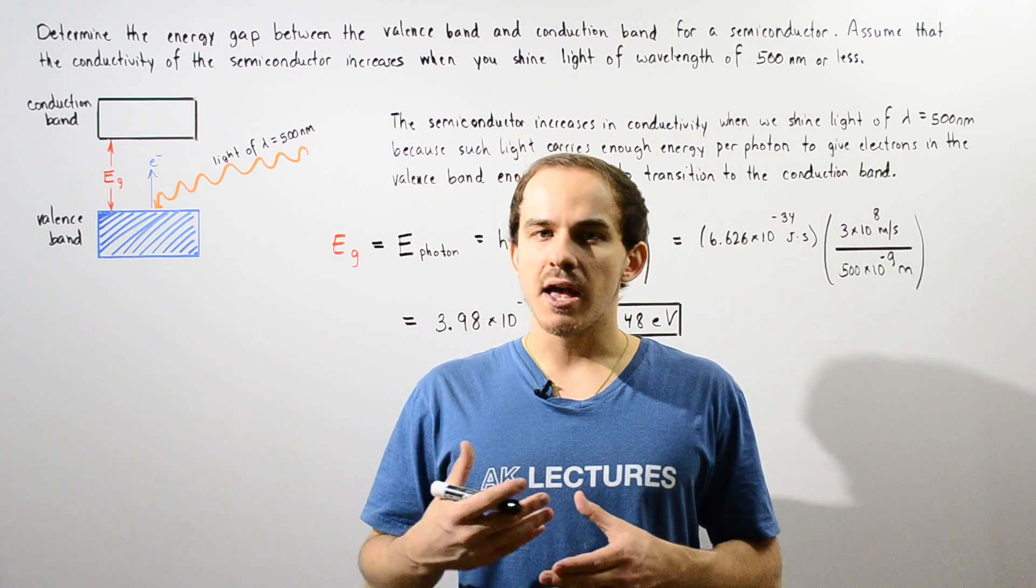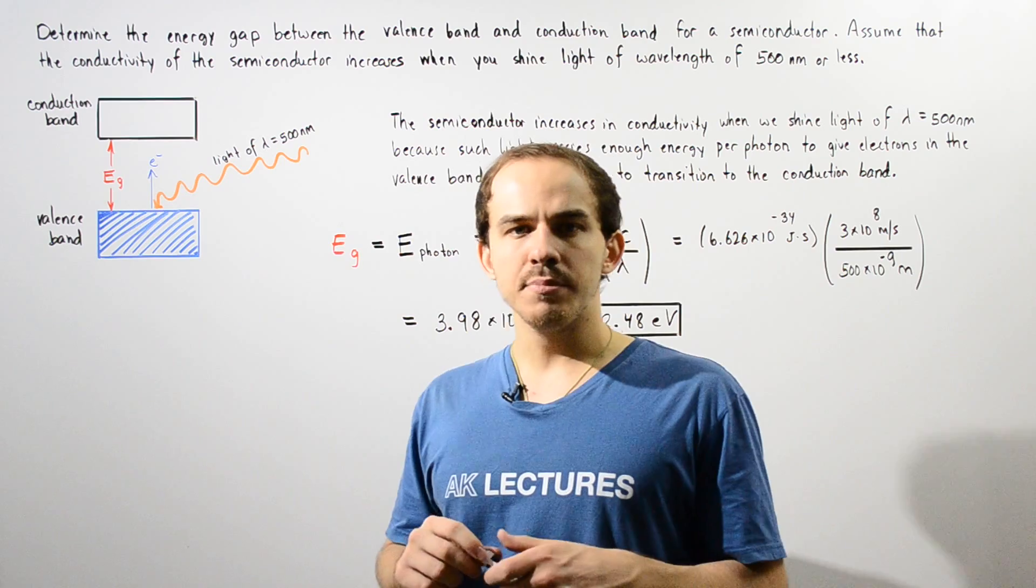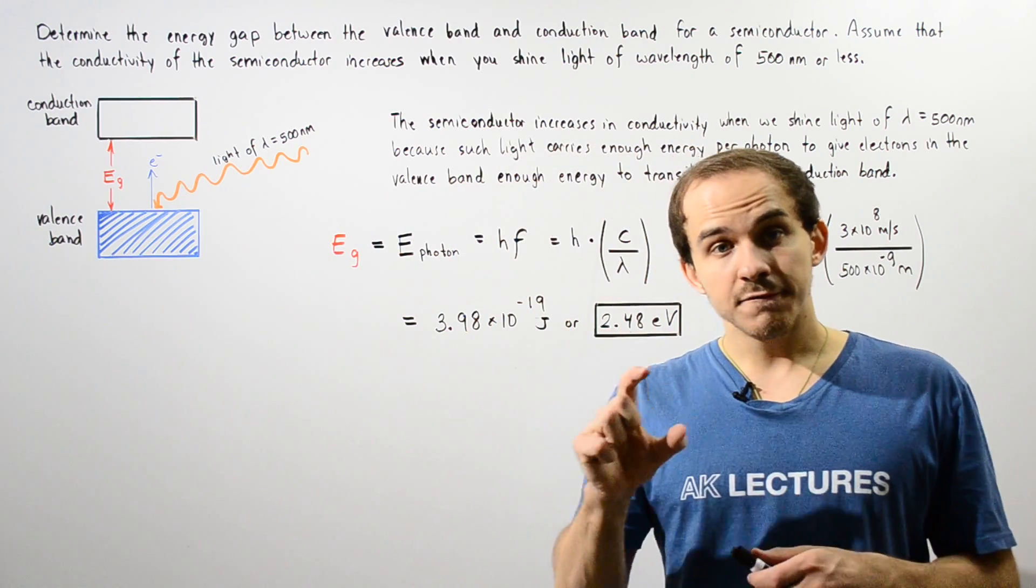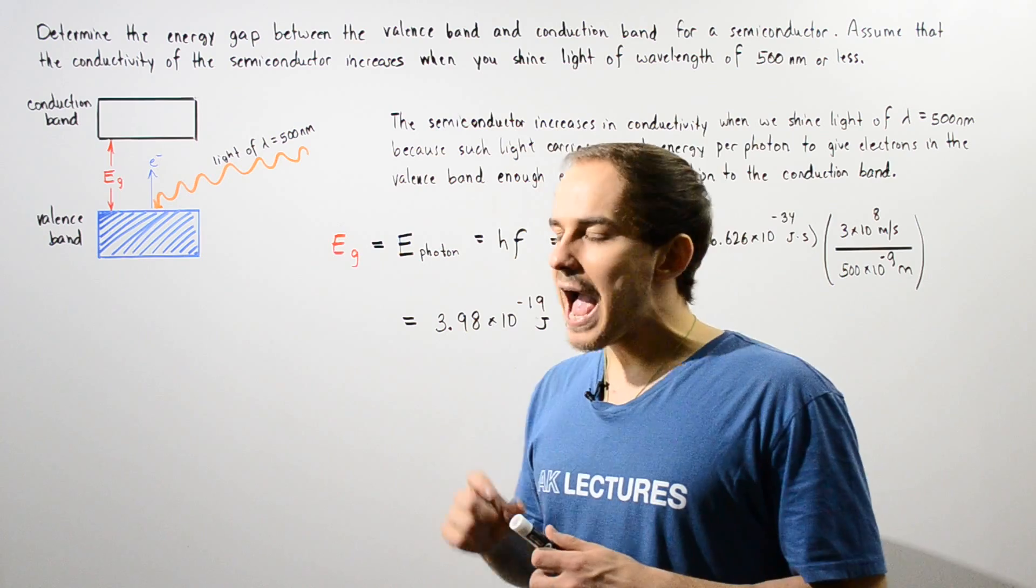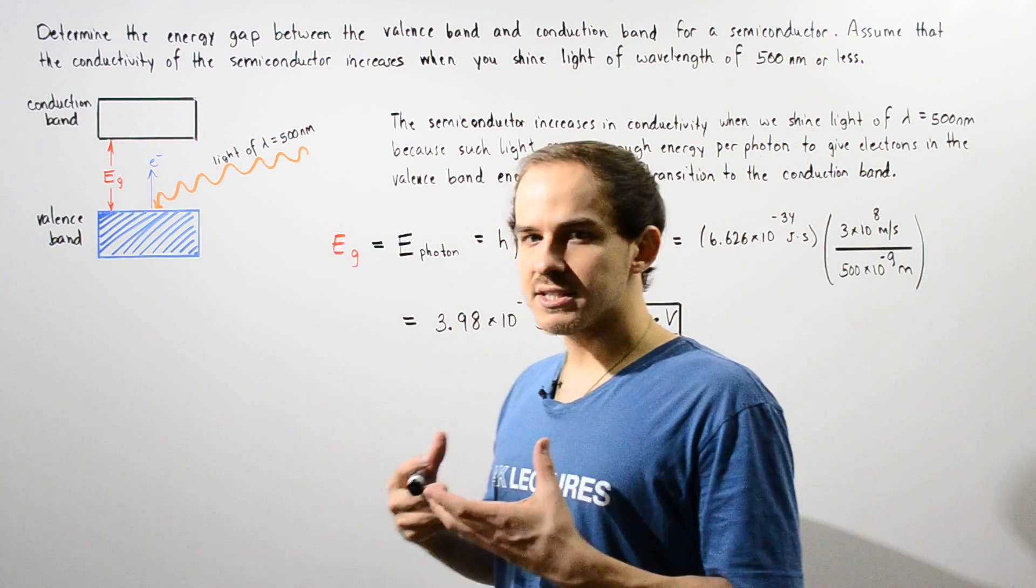Now that we discussed what semiconductors are, let's take a look at the following example that deals with calculating the energy gap or the difference in energy between our valence band and the conduction band of our semiconductor.